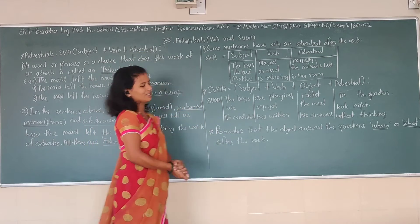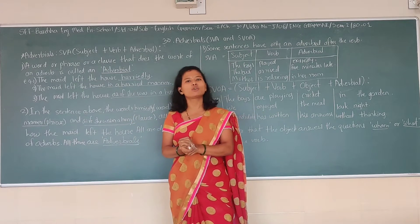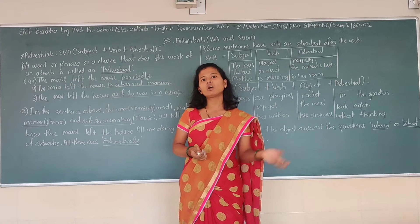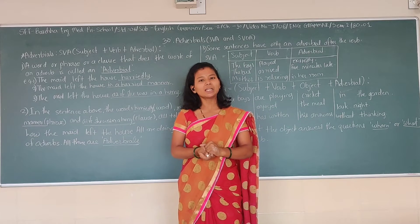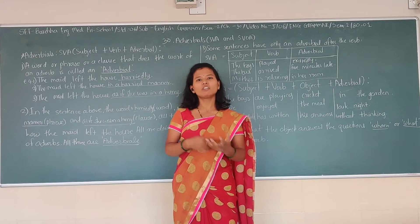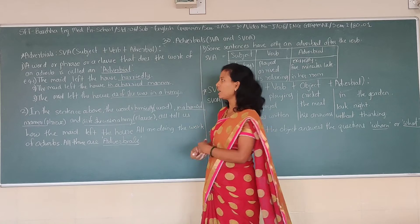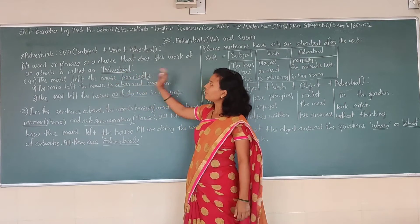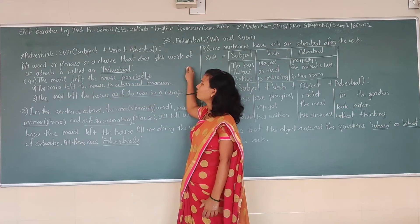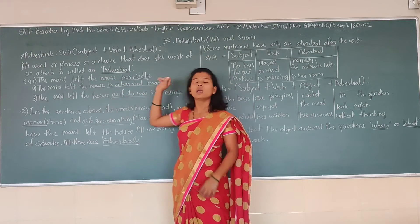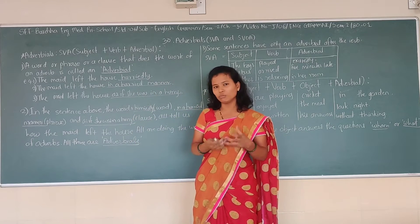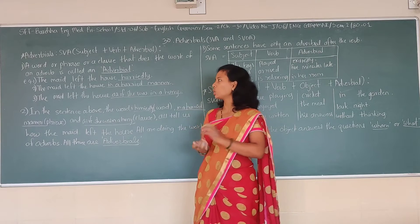What is adverbials? In adverbials there are two types of sentence structures. First is SVA — that is subject, verb, and adverbials. Second is SVOA — subject, verb, object, and adverbials. An adverbial is a word, or a phrase, or a clause that does the work of an adverb. It can be a word, it can be a phrase, it can be a clause.